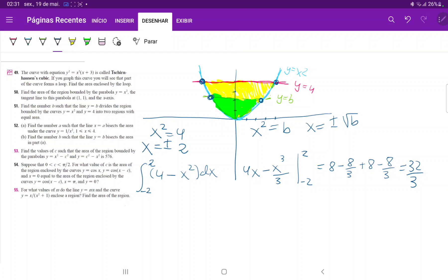Now let's set up this integral. This is the integral from minus square root of b to positive square root of b of the upper curve now is b minus x squared, and all this times dx.